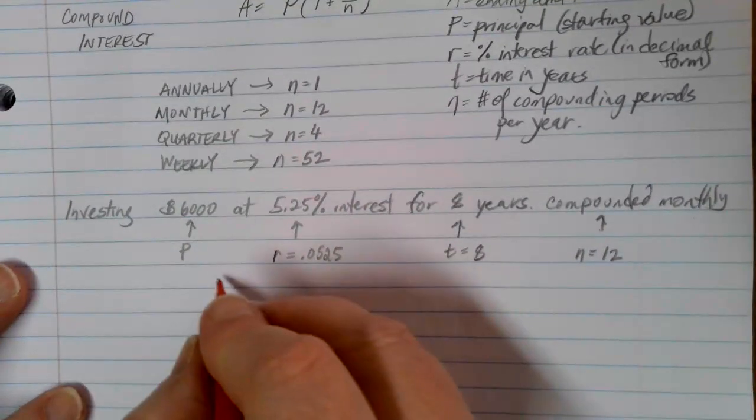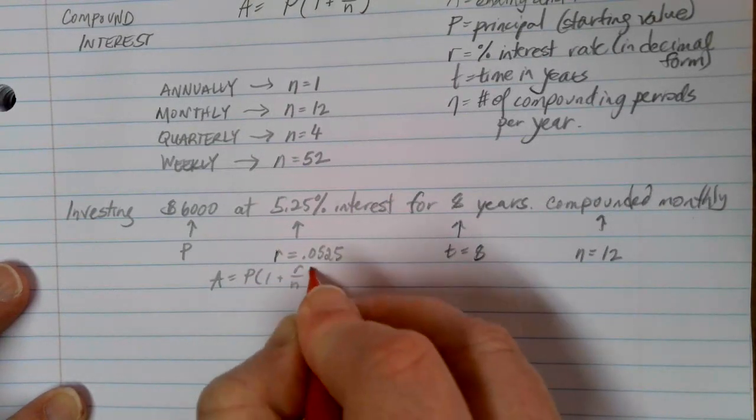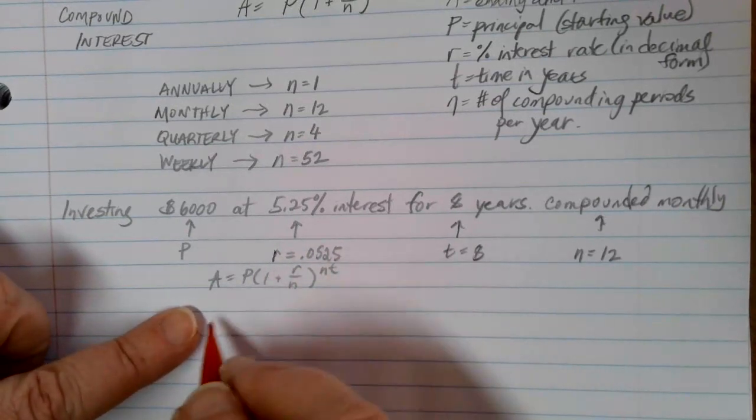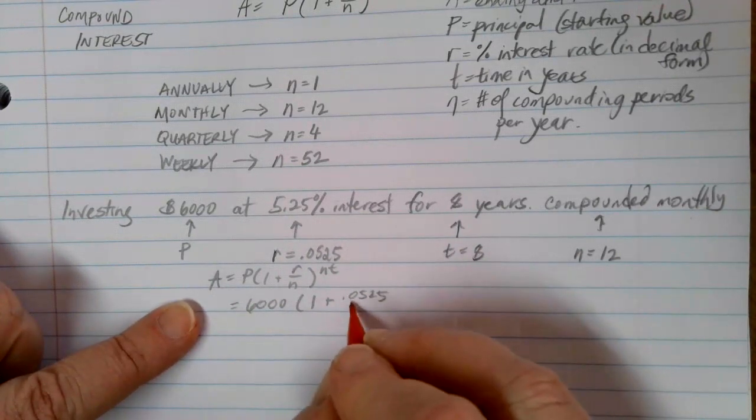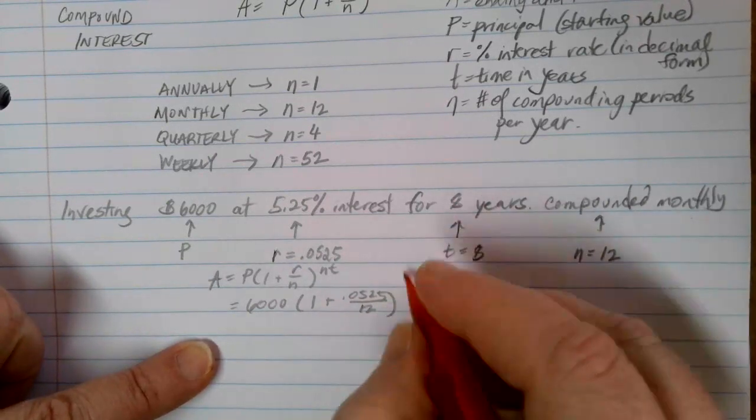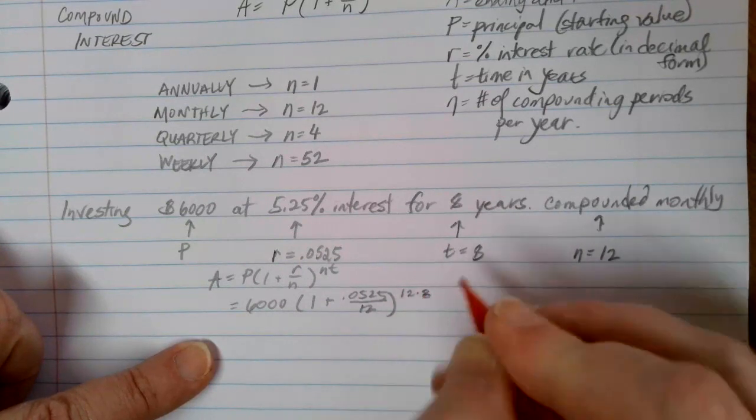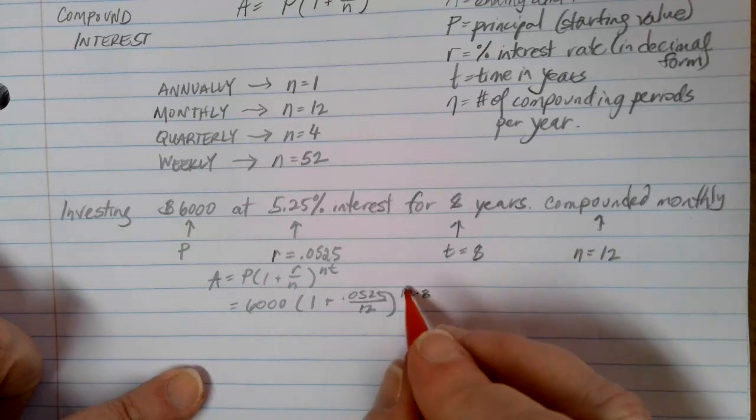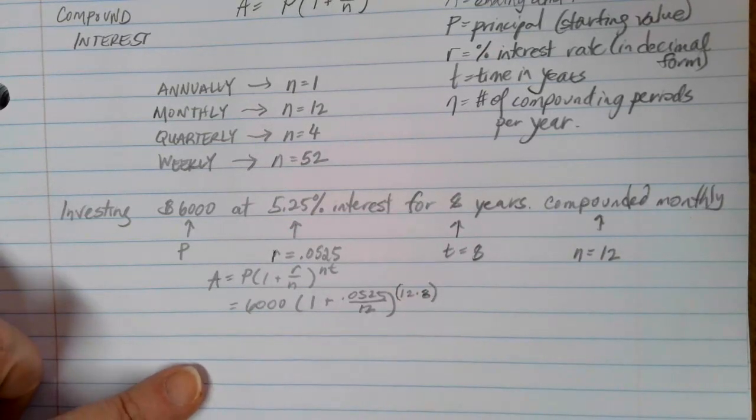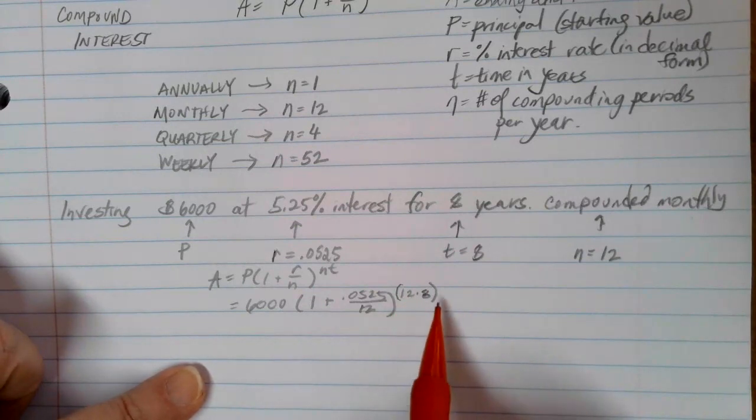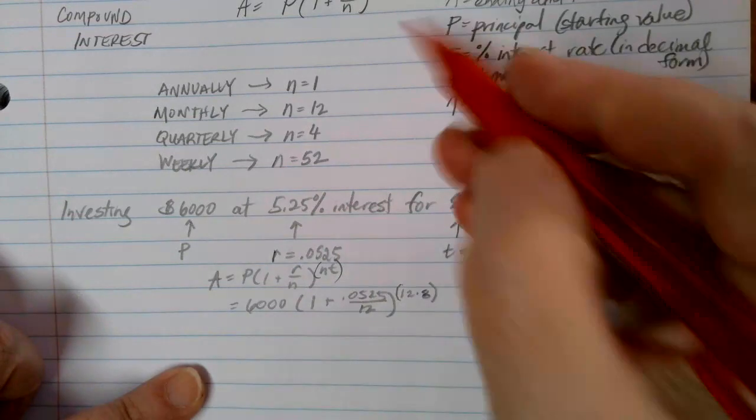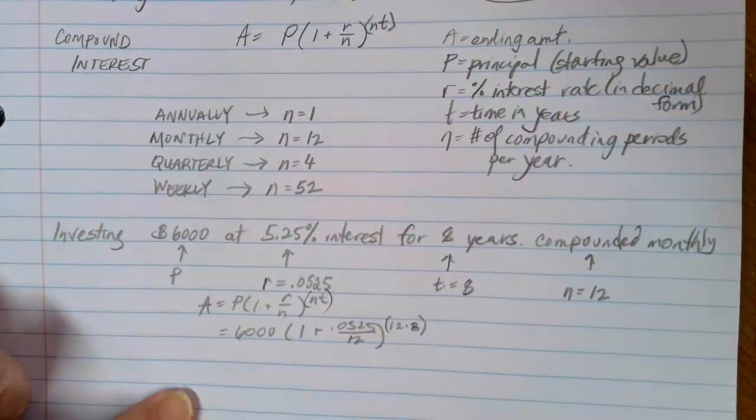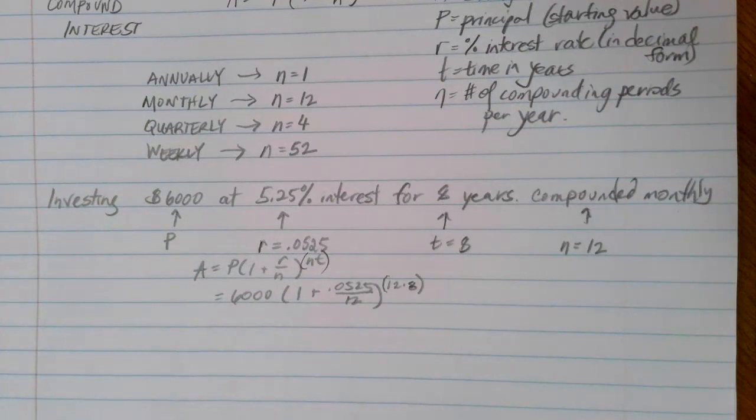So as I go to my compound interest formula, A is equal to P times 1 plus R over n to the nt. I'm going to put these different values in here. So P is going to be 6,000 times 1 plus my rate is 0.0525 divided by 12 because it was compounded monthly. And then up here, I'm going to do 12 times 8. Now, both the 12 and the times 8 both need to be in the exponent. For almost every calculator, including Desmos, you need to put that 12 times 8 in parentheses so it makes sure that all of those values are showing up in the exponent as we go forward. In fact, it might be nice for you to write that nt in your formula in parentheses just to remind yourself of that. At this point, then, we can go ahead and use our favorite calculator. And I'm going to go ahead and just pull my Desmos app up here on my phone.